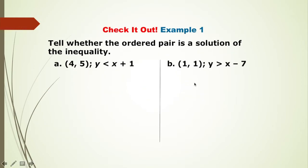Next, for these examples, tell whether the ordered pair is a solution of the inequality. So let's take letter A, 4 and 5. Let us plug into x and y.